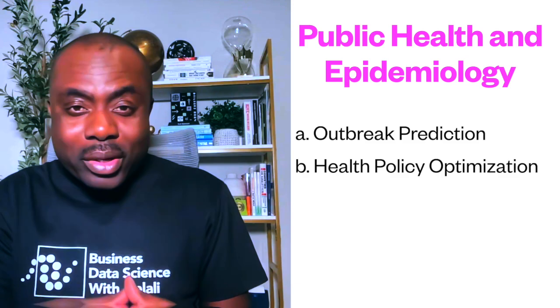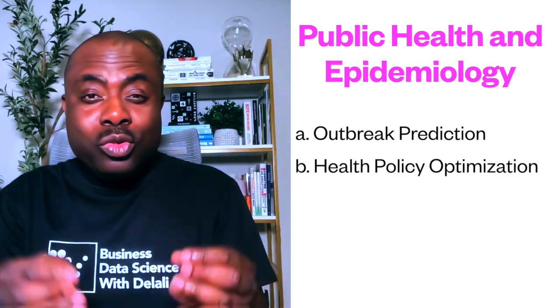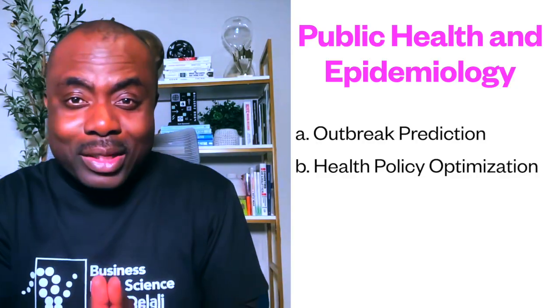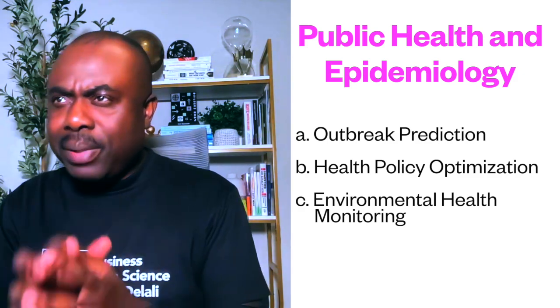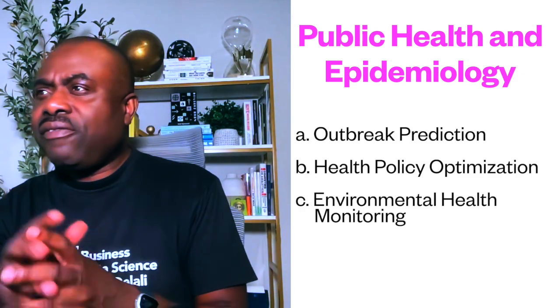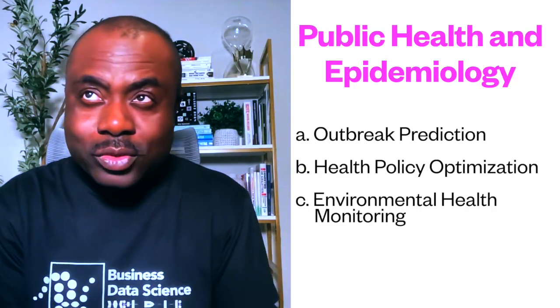You can also use AI for health policy optimization. From a public health standpoint, when you implement policies, you can use AI and proper data to assess the impact of those interventions — vaccination strategies, pandemic controls, and how well they are working. AI can provide analysis and insights to properly manage public health. Additionally, environmental health monitoring uses AI to correlate environmental data with health outcomes and inform policy decisions.